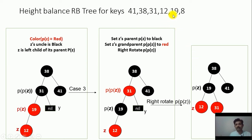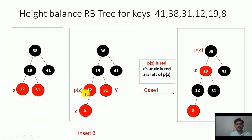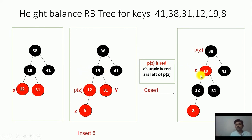After insertion of 19, we have to insert 8. The 8 is inserted following binary search tree rules as a new node, so its color is red. This is a g node, p of g is red, and uncle is also red, so case 1 will be applied. The color of p of g and uncle will be made black, the color of grandparent will be red, and we make the grandparent the new g node. Thanks for watching. Please revise the course and subscribe and like if you like the video.